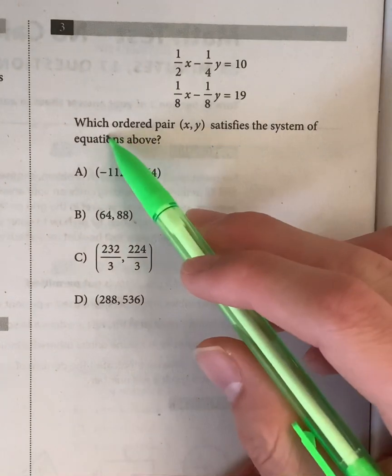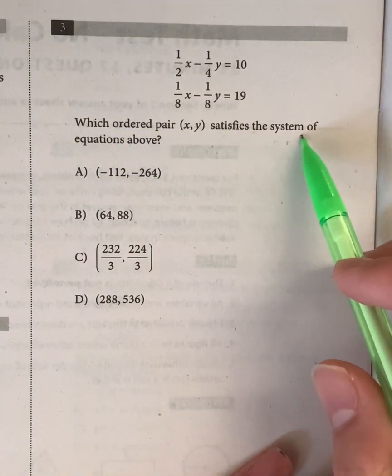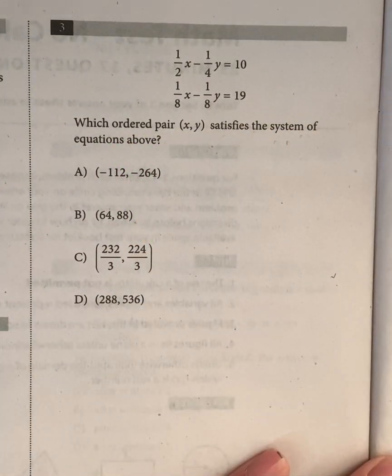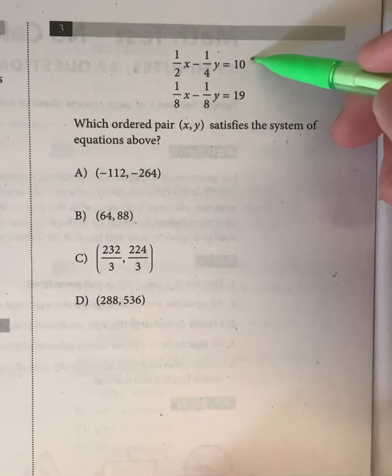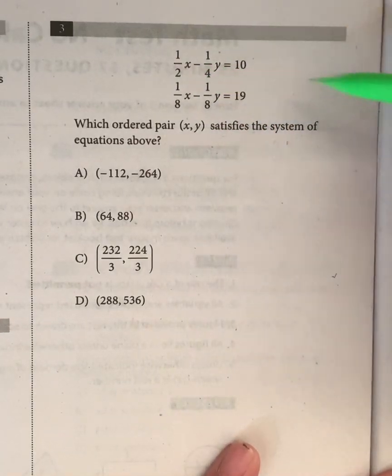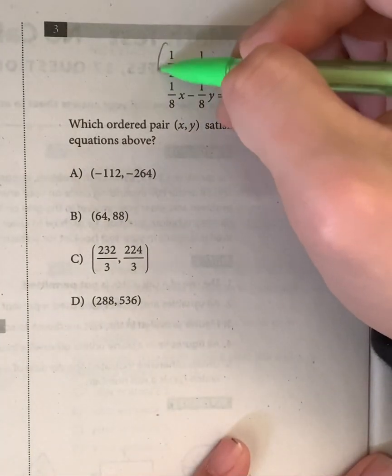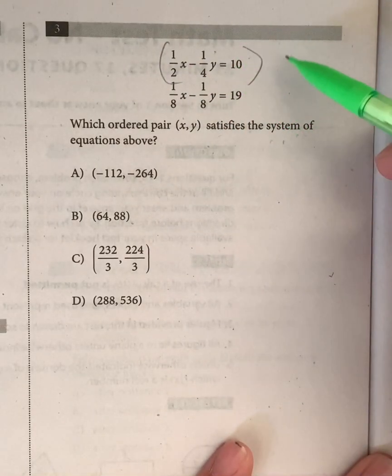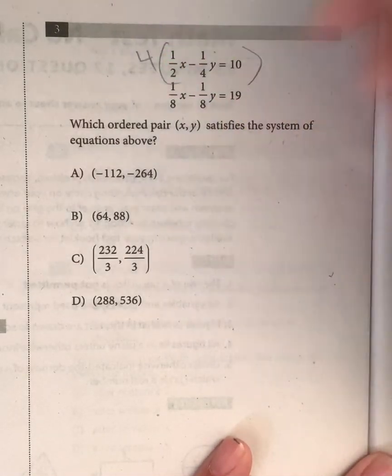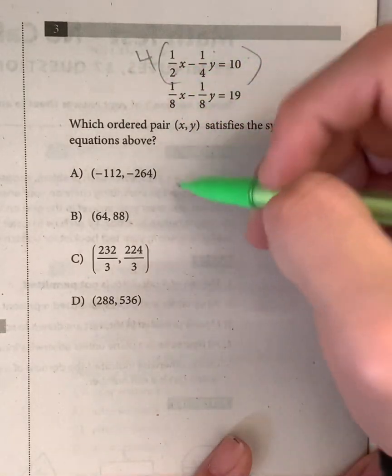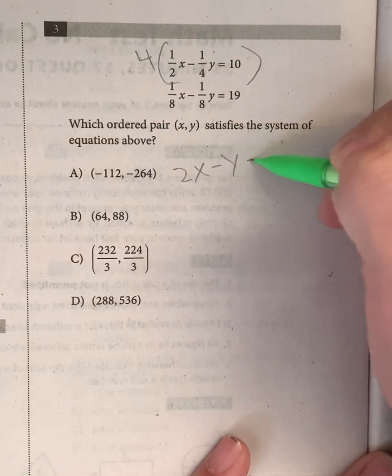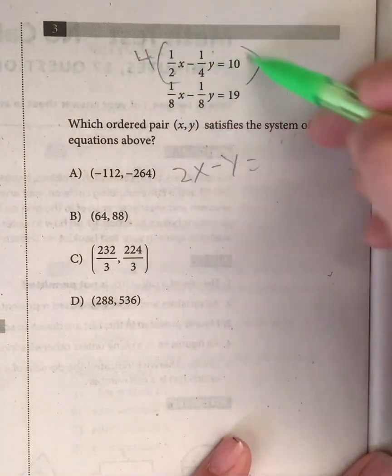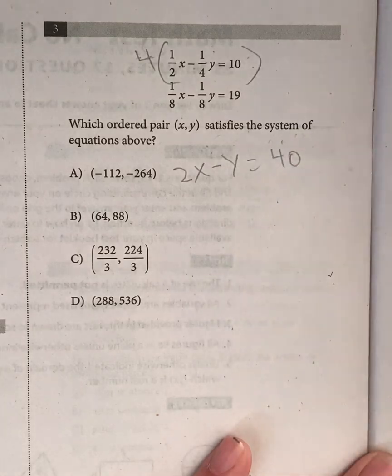Okay, moving on to question 3. Which ordered pair (x,y) satisfies the system of equations above? So in order to solve this, we're going to use something called elimination. What we need to do is, because you see how everything's fractional, you never want to solve a system of equations with fractions. So what I'm going to do to this top equation is multiply by the least common multiple, which seems to be 4. Because 4 times 1/2 gives us 2x. -1/4 times 4 gives us -y = 4 times 10, which equals 40.